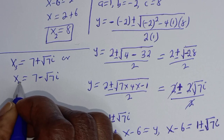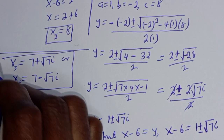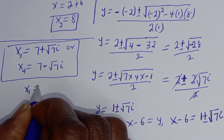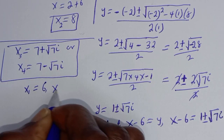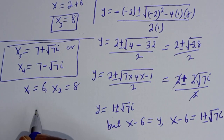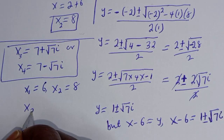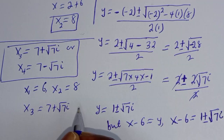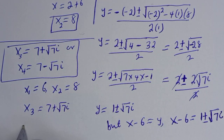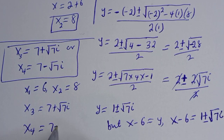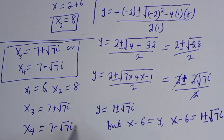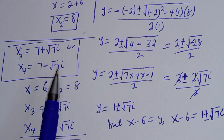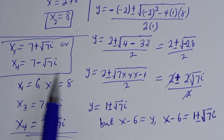This is S3 and S4. So our final answers are: x1 equals 6, x2 equals 8, x3 equals 7 plus root 7i, and x4 equals 7 minus root 7i. If you enjoyed the video, please don't forget to like, share, comment, and subscribe. Thank you.